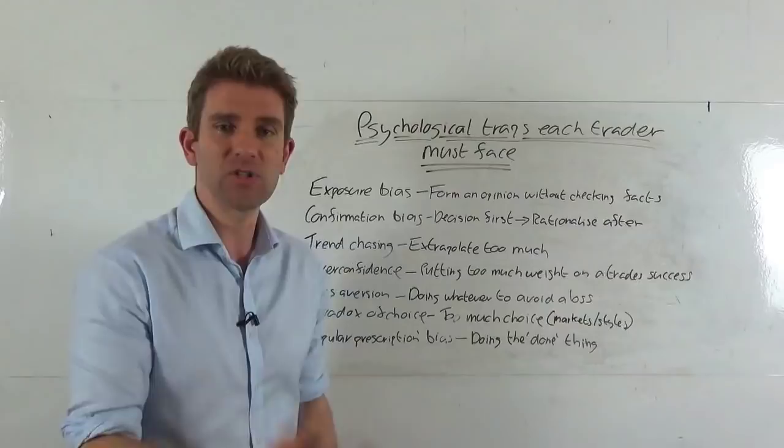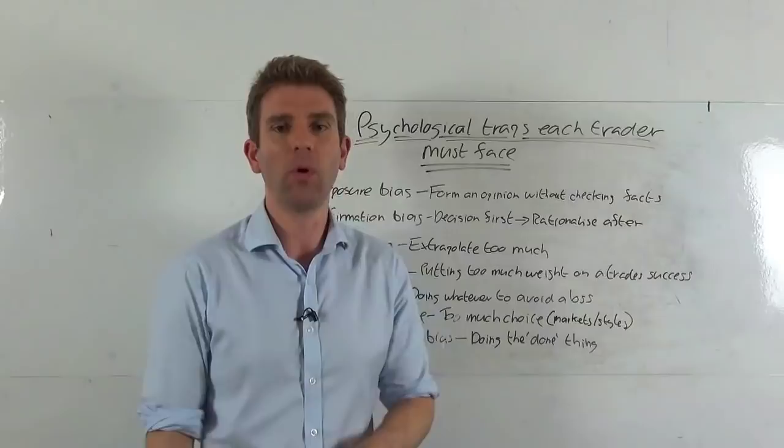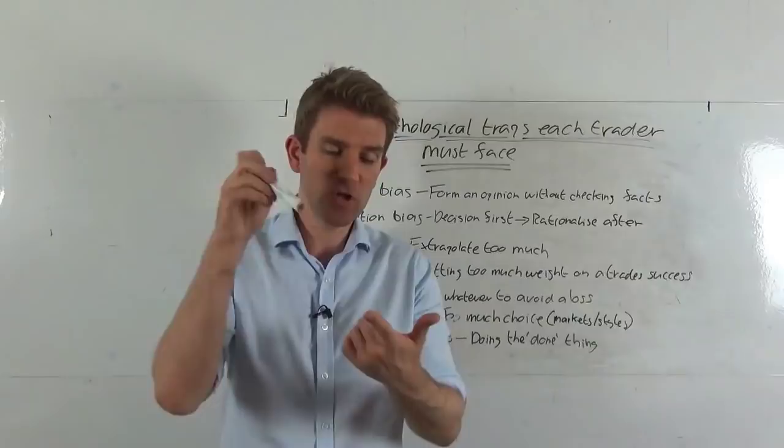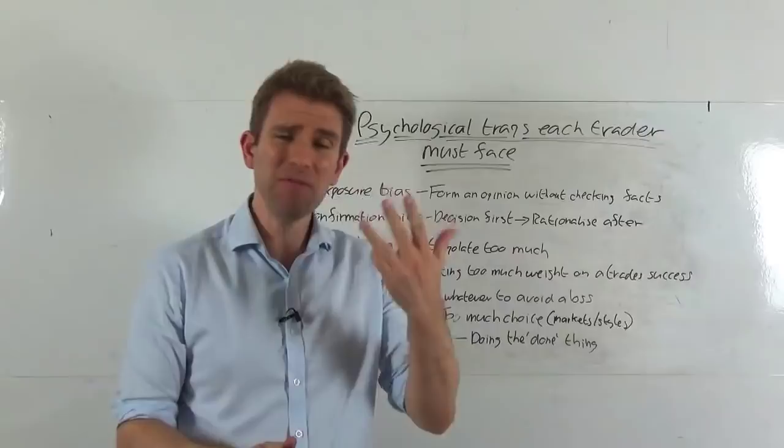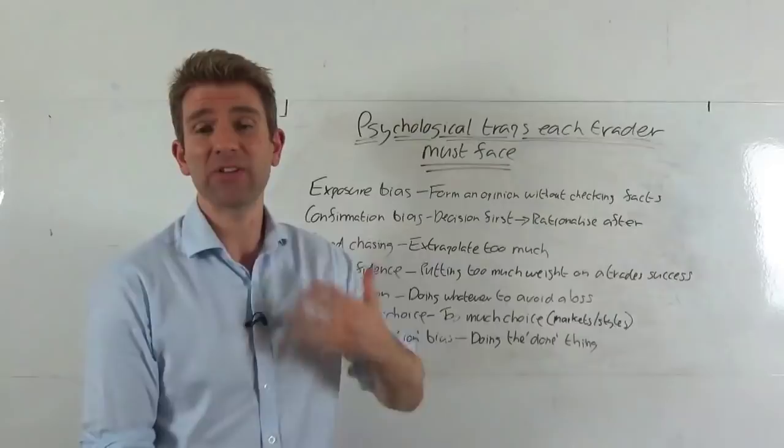Right. Number six, paradox of choice. This is a really important one. Okay, they're all good, but this is an important one. We have so much choice. We can trade multiple markets. We can trade multiple timeframes. We can trade multiple strategies. There is just an almost infinite amount of choices. Think of all the permutations of choices we've got. When you think of the markets, timeframes, the strategies, etc. It's ridiculous. And people think that's a good thing. It's not. Paradox of choice. Too much choice. Market starts is a bad thing.